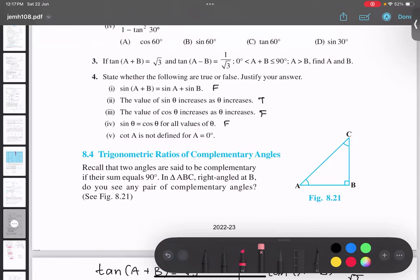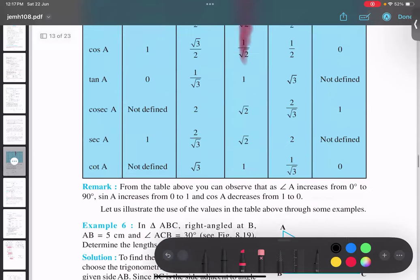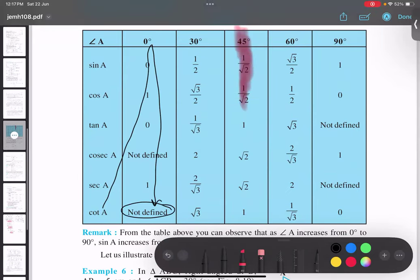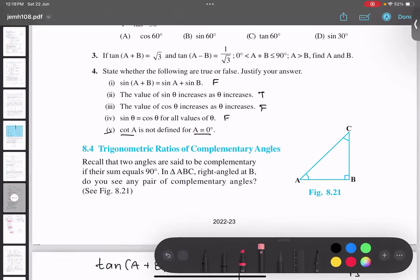Fifth part: cot A is not defined at 0. So cot A, go to the table. Cot A is actually not defined at 0. Okay, the question is saying cot A is not defined at A equals 0, so it is true. Is that thing clear? True and false are also done. Quickly, let's move on to the next exercise.